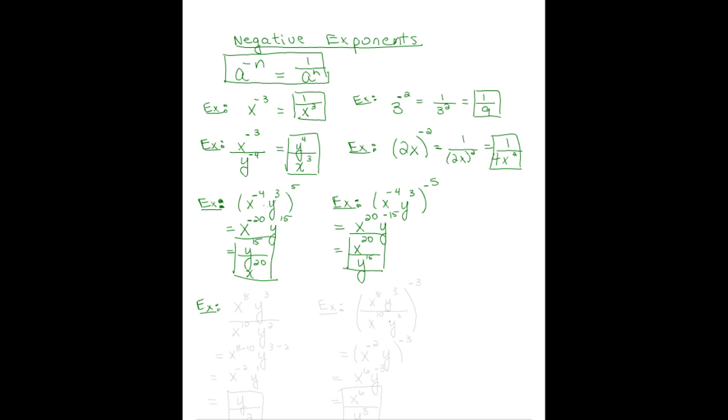For our next example, we could have x to the 8th, y cubed over x to the 10th, y squared. When we're dividing like bases, we subtract the exponent, so this is equal to x to the 8th minus 10, times y to the 3 minus 2, which equals x to the negative 2, y to the first.